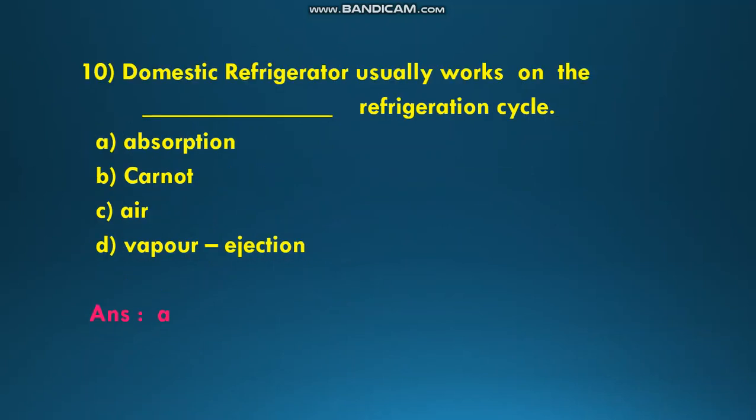The next question is: domestic refrigerator usually works on which refrigeration cycle? The options are absorption, Carnot, air, or vapor ejection. The answer is absorption refrigeration cycle. Whatever you are using in your household purposes, the refrigerator works on absorption refrigeration cycle, so the answer is A.